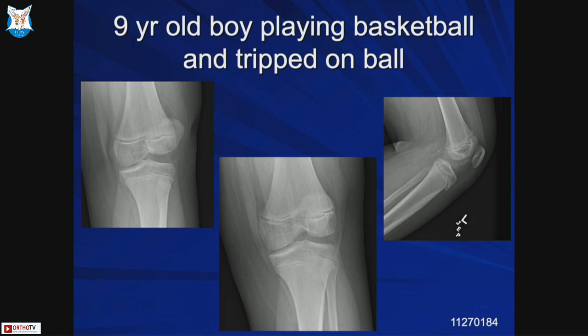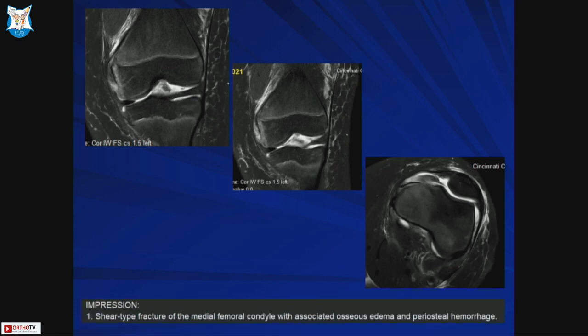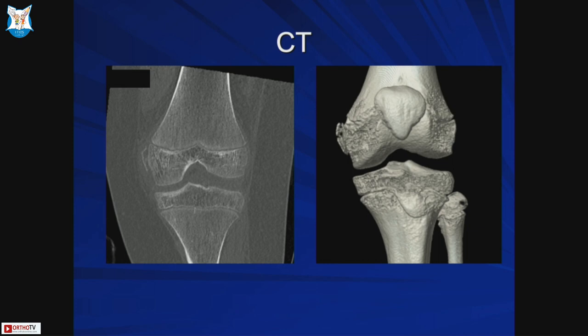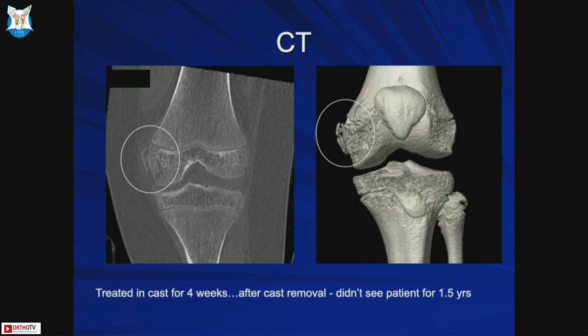Another example: a nine-year-old boy playing basketball who tripped and sustained a shear-type fracture of the medial femoral condyle with associated bone edema and periosteal hemorrhage. This is a typical perichondrial ring injury. There is no fracture visible on x-ray, but the perichondrial ring has been pulled up with the injury. CT scan shows only a thin sliver of bone, and you would not anticipate growth arrest based on imaging alone, but MRI shows significant damage to the perichondrial ring.